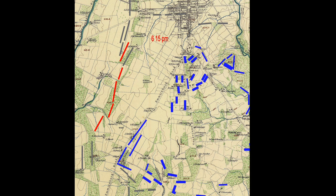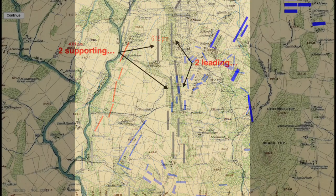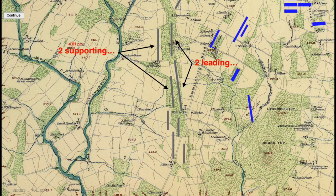It seems that for some reason Longstreet and A.P. Hill never did meet before the attack to work out the details. Also, note that when McLaws and Hood's divisions attacked, it was in-depth, with two brigades leading followed by two in support. But Anderson's division attacked in a single line.